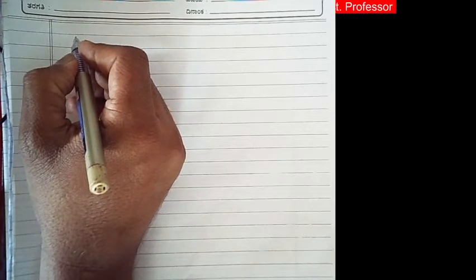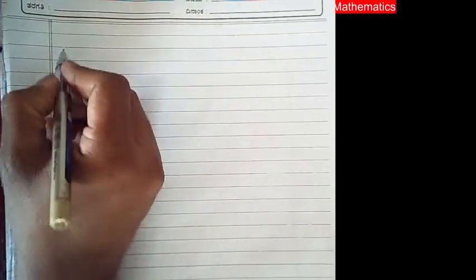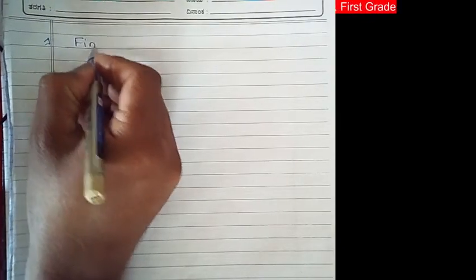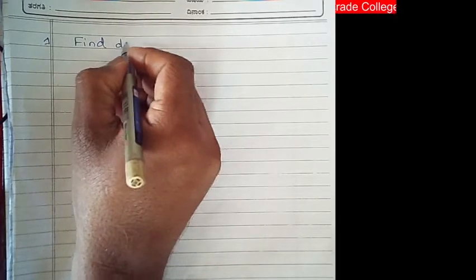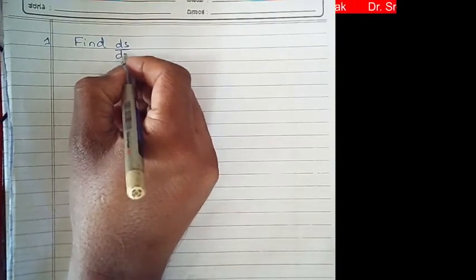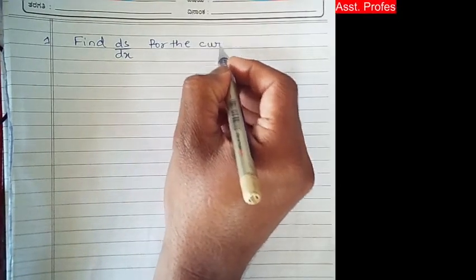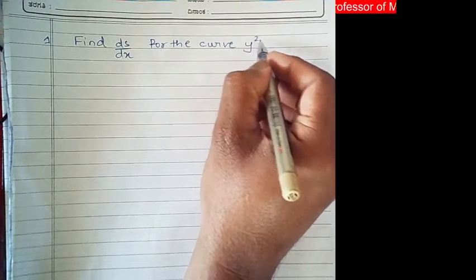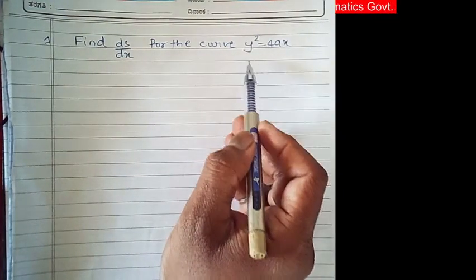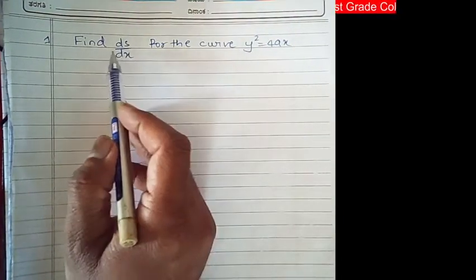Good morning students. Today we will solve some more problems on derivative of arc length. The first problem is: find ds/dx for the curve y² = 4ax. This y² = 4ax is nothing but a parabola, and for this curve we have to find the derivative of arc length.